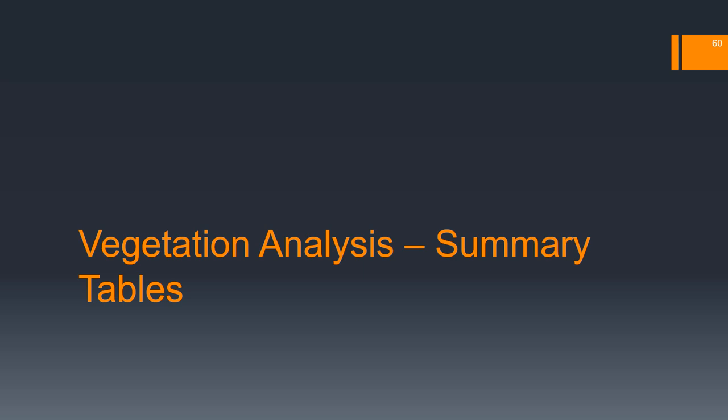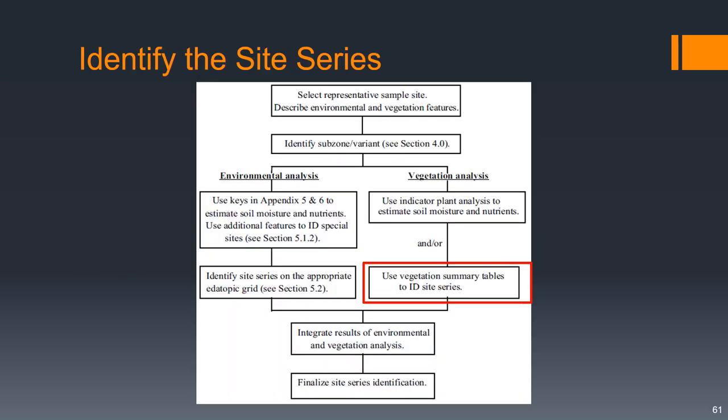In addition to the indicator plant analysis, we can also look directly at summary tables of vegetation for given site series. We'll use reference summary tables for site series and compare that to what we found to help us with our classification.